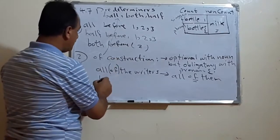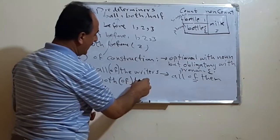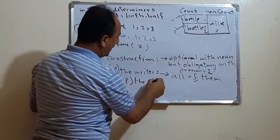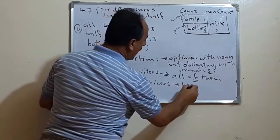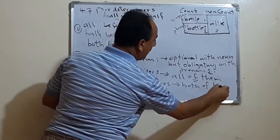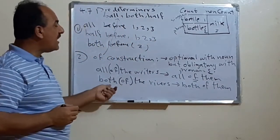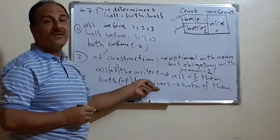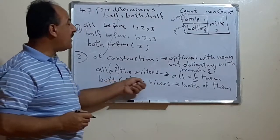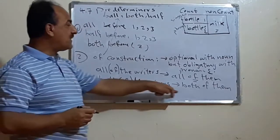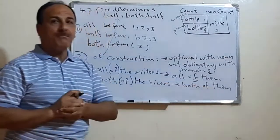The same applies to 'both.' We can say 'both of the rivers' or 'both rivers' — 'of' is optional with the noun. But we must say 'both of them,' not 'both them' — 'of' is obligatory with the pronoun. And with 'half': we can say 'half of the juice' or 'half the juice,' but when we change 'juice' to the pronoun 'it,' we must say 'half of it.'